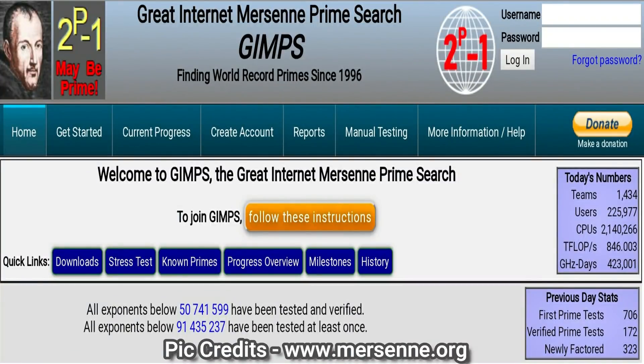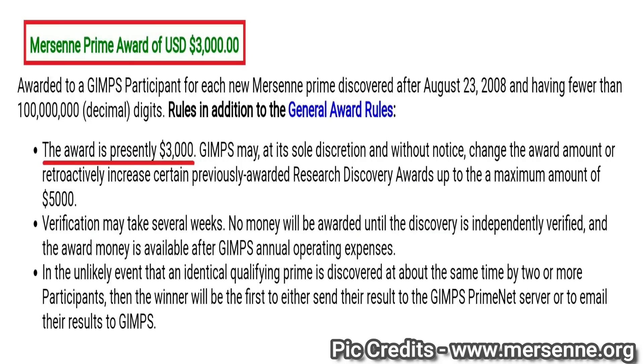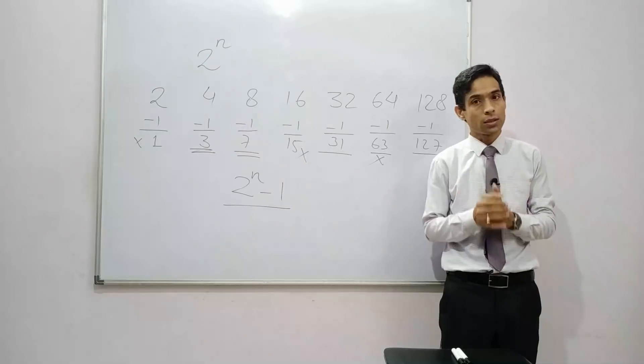Great Internet Mersenne Prime Search was formed in 1996 to discover world record size Mersenne prime numbers. GIMPS is currently offering a $3,000 research discovery award for those who download and run their free software to discover new Mersenne prime numbers.